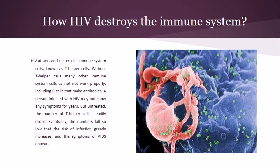How HIV destroys the immune system: HIV attacks and kills crucial immune system cells known as T-helper cells. Without T-helper cells, many other immune system cells cannot work properly, including B-cells that make antibodies. A person infected with HIV may not show any symptoms for years. But untreated, the number of T-helper cells steadily drops. Eventually, the numbers fall so low that the risk of infection greatly increases and the symptoms of AIDS appear.